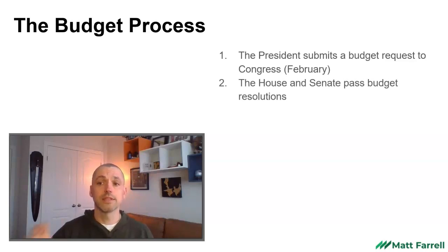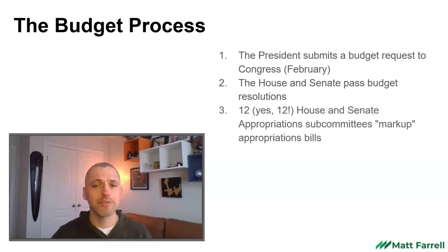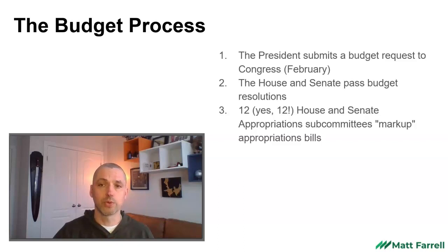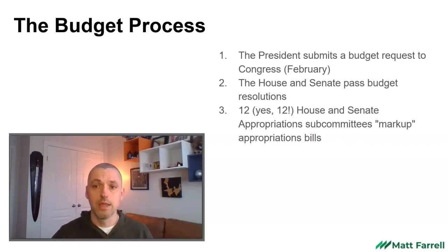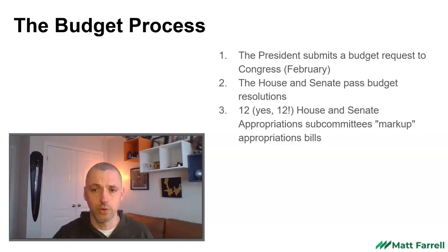The next step is for the House and the Senate to pass budget resolutions — this is sort of a template that is agreed upon. After that, there are 12 House and Senate appropriations bills. There are 12 not because there are 12 months, but because there are 12 subcommittees. Each one of the appropriations subcommittees is responsible for a certain part of government spending. They will take these and mark up and amend the appropriations bills to solidify the final language for levels of spending on certain programs.